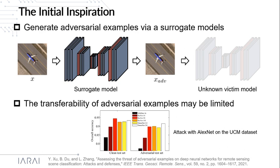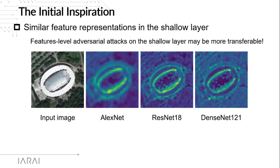To this end, we attempt to find the similarity shared by different networks. The initial inspiration of our work comes from an observation that different networks may yield similar feature representations in a shallow layer. Thus, feature-level adversarial attacks on the shallow layer may also be more transferable.